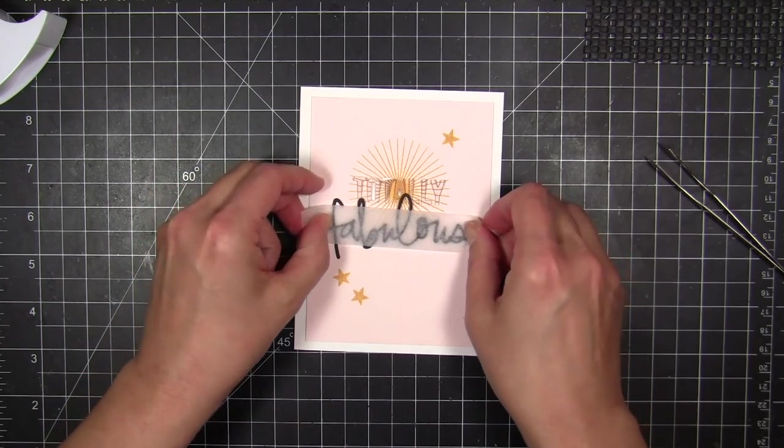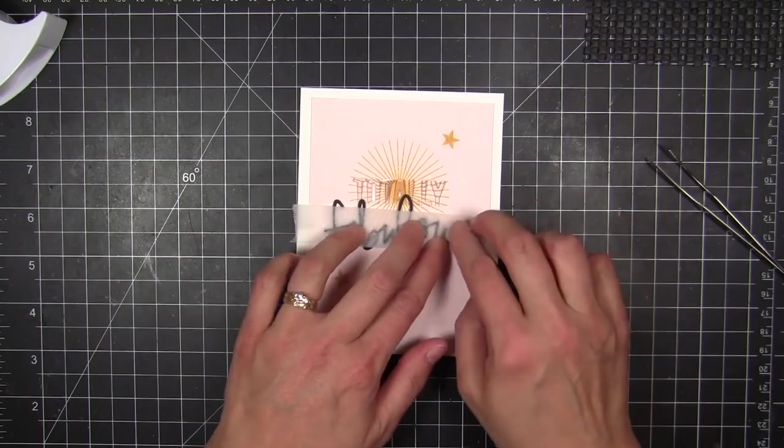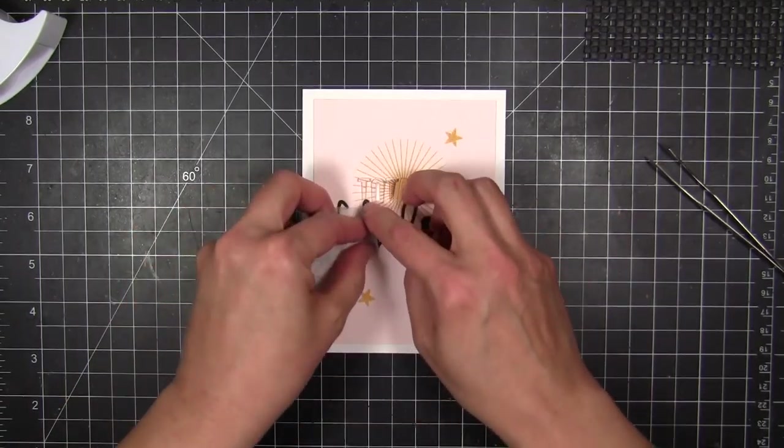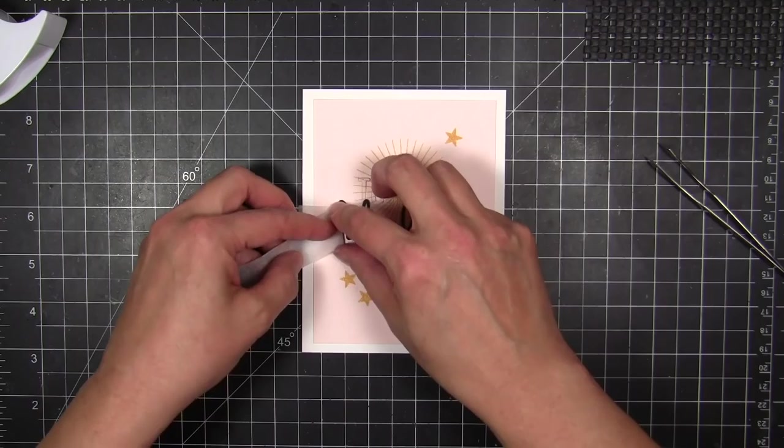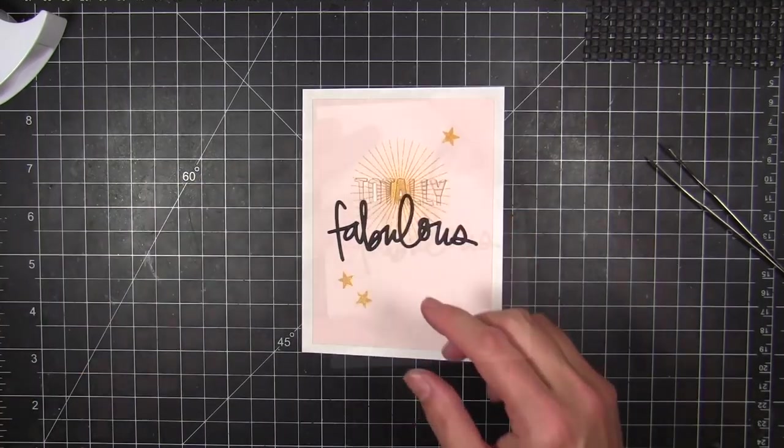And then after the glue has started to set up, I can come back and very carefully remove that micropore tape. I did neutralize it a little bit because it is quite sticky and you don't want to mar the surface of your paper.